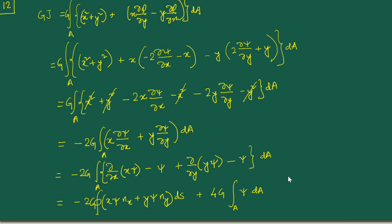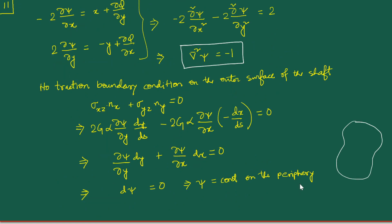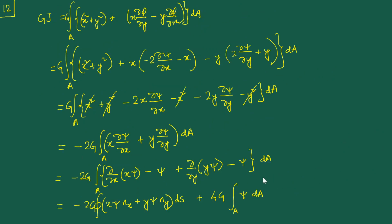Hello everyone. In the previous video we had started discussing the formulation of the torsion problem in terms of the Prandtl stress function. We found that using this approach the torsion problem can be presented in terms of the governing equation ∇²ψ = -1. We also found the important condition that ψ is equal to a constant on the periphery, and the expression for the torsional rigidity GJ.